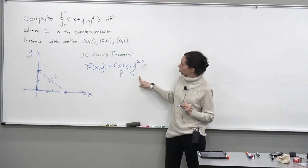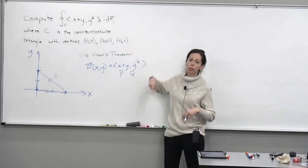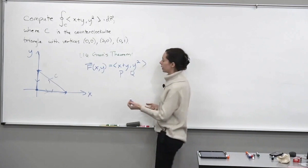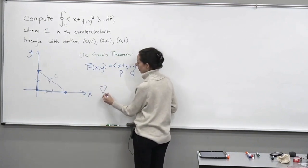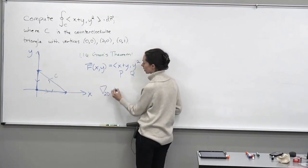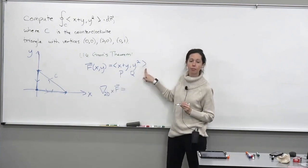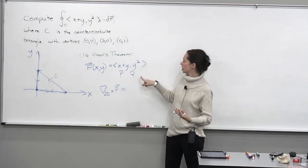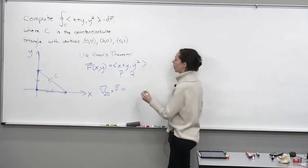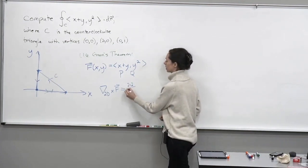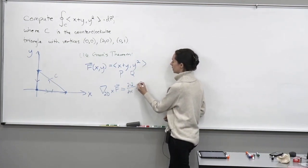So what we're going to do is switch from the circulation integral to the double integral of a quantity that I often denote as the 2D scalar curl of this two-dimensional vector field F. You can also just think of it as Qx minus Py, or DQ/dx minus DP/dy.